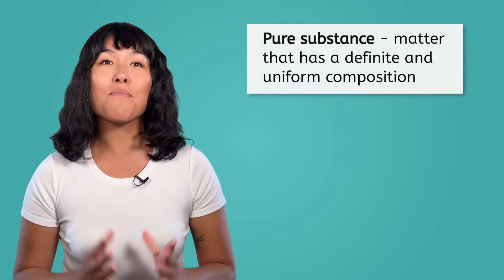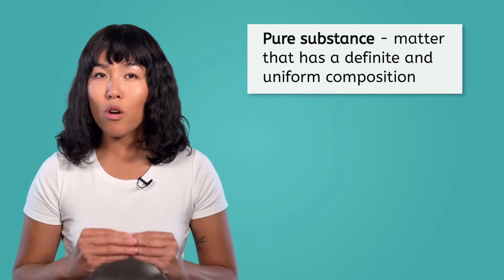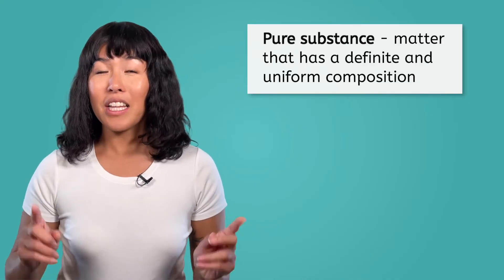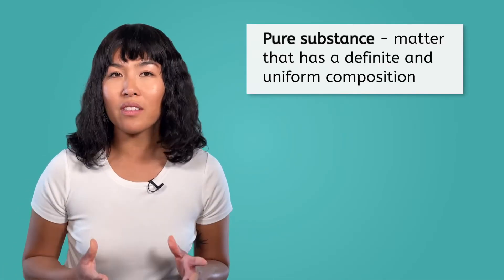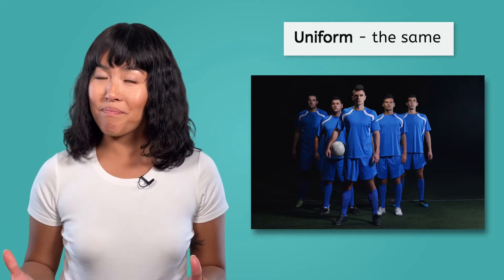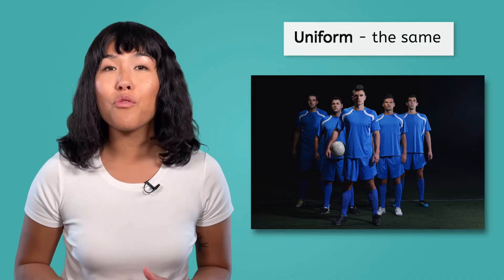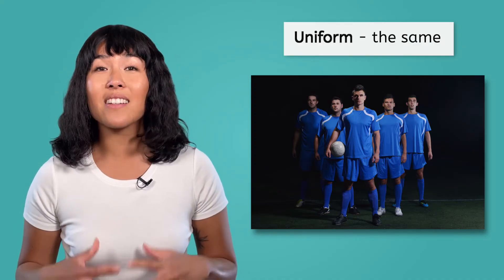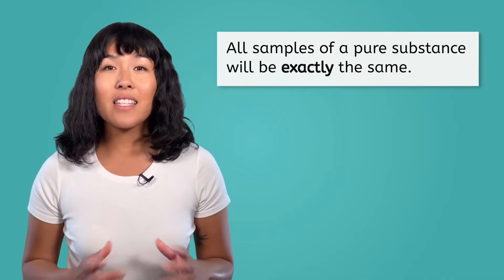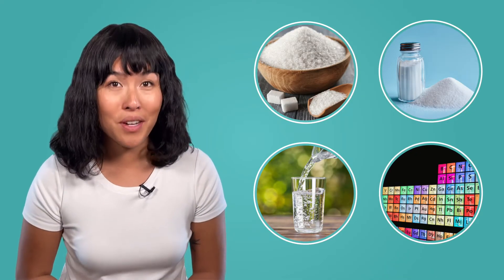A pure substance is matter that has a definite and uniform composition. Definite means certain and uniform means the same. Think about a team uniform — when everyone wears it, they are all dressed the same. So definite and uniform composition means certain and the same composition, which means that all samples of the substance will be exactly the same. Examples of pure substances are sugar, salt, water, and all of the elements on the periodic table.